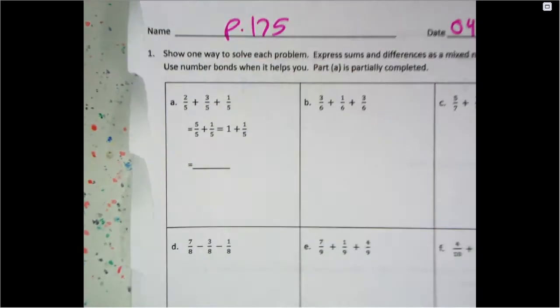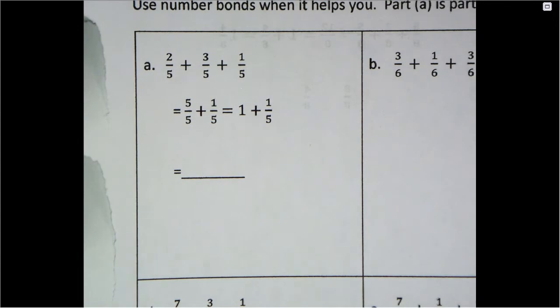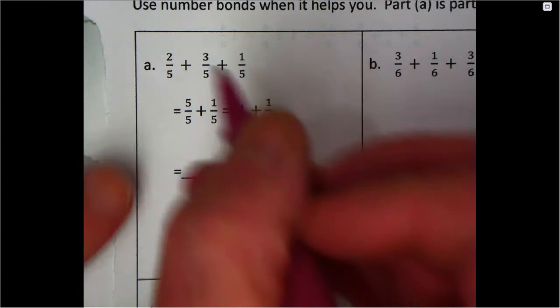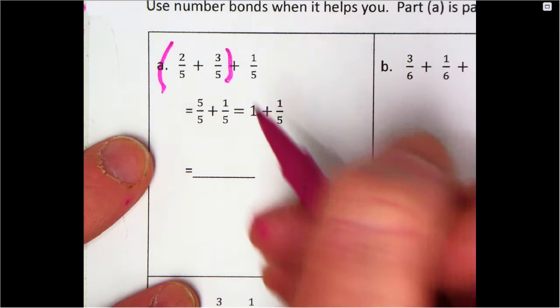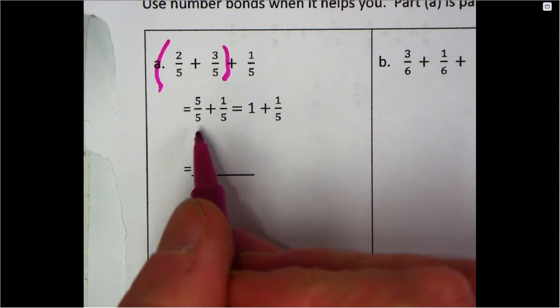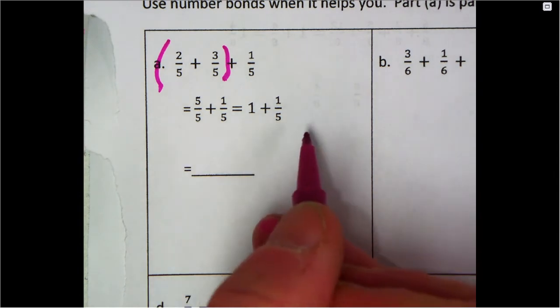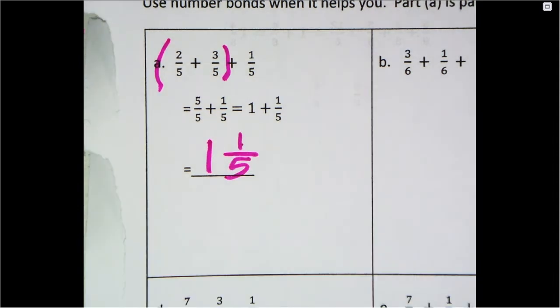We have 2/5 + 3/5 + 1/5. Well, we know we can add the 2/5 and 3/5 together, right? We have 5/5. Then we get 5/5 + 1/5, and 5/5 we know is one whole. So we would do one whole plus 1/5 would equal 1 and 1/5.